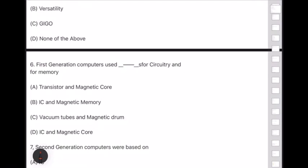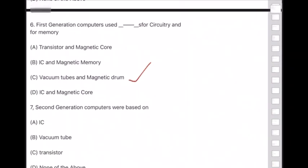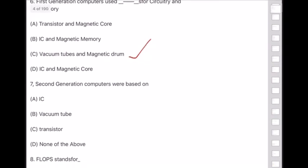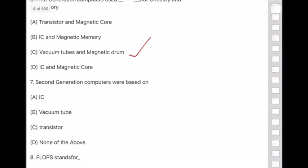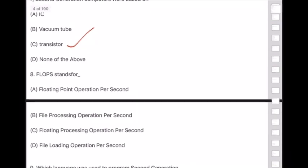Answer to question 6 is option C — vacuum tubes and magnetic drums. Question 7: Second generation computers were based on option C — transistors. Question 8: FLOPS stands for Floating Point Operations Per Second.